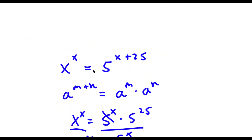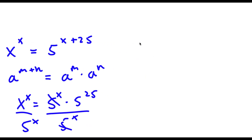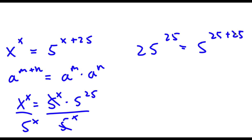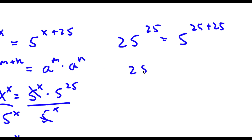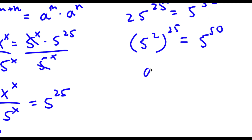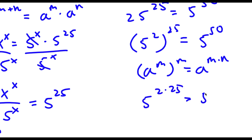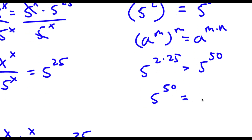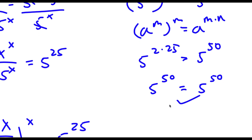Now to check — our original equation was x to the power of x is equal to 5 to the power of x plus 25, and x equals 25. So I have 25 to the power of 25 is equal to 5 to the power of 25 plus 25. Now 25 plus 25 is 50, so I have 25 to the power of 25 is equal to 5 to the power of 50. I can replace 25 with 5 squared, so 5 squared to the power of 25 equals 5 to the power of 2 times 25, which is 5 to the power of 50. So 5 to the power of 50 equals 5 to the power of 50, and this is right, so our solution is right as well.